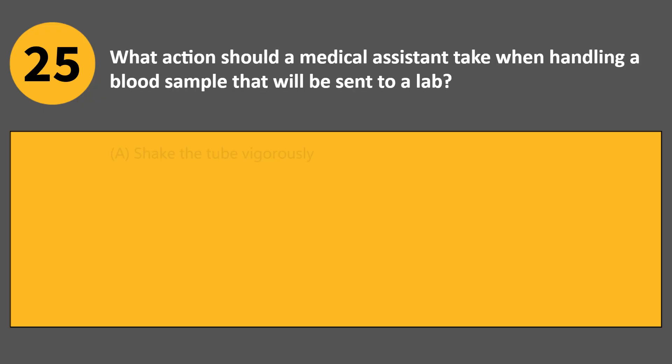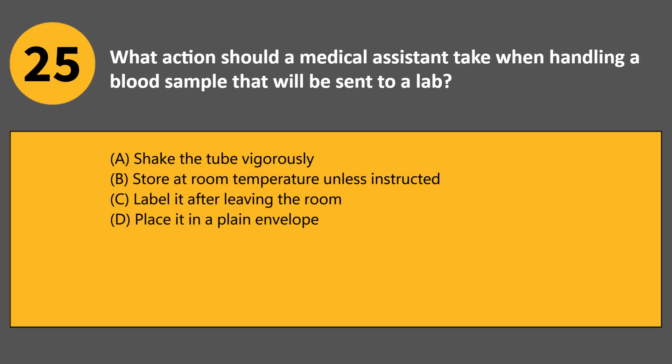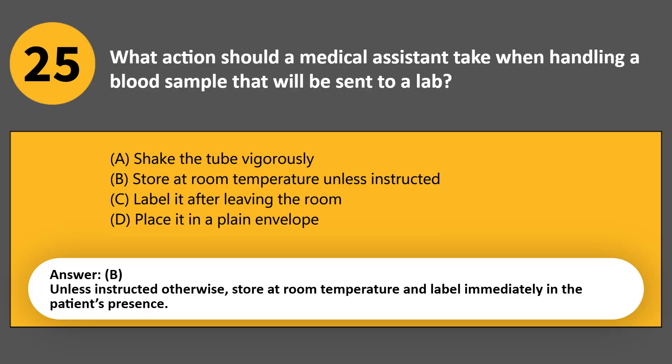What action should a medical assistant take when handling a blood sample that will be sent to a lab? A. Shake the tube vigorously. B. Store at room temperature unless instructed otherwise. C. Label it after leaving the room. D. Place it in a plain envelope. Answer B. Unless instructed otherwise, store at room temperature and label immediately in the patient's presence.